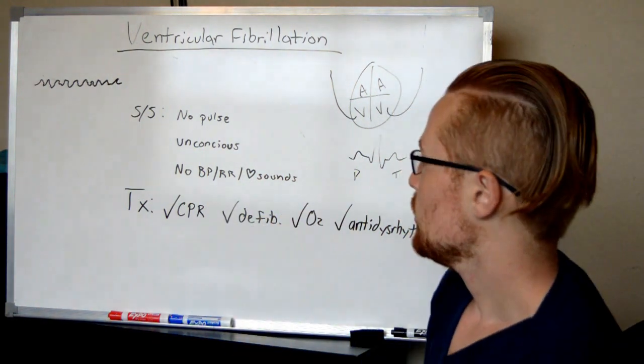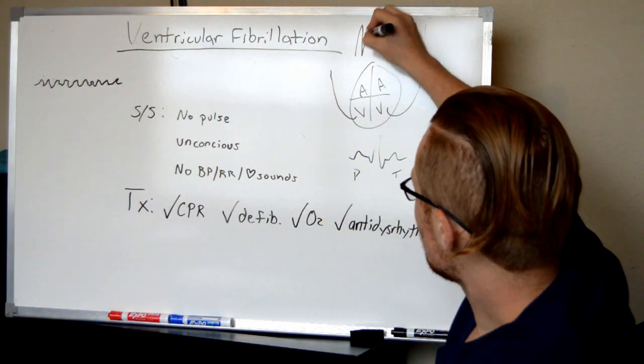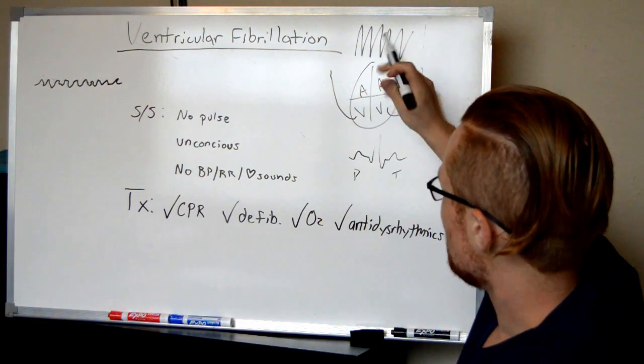So in V-tac, you may still have a pulse. V-tac looks different than V-fib in that you'll see the sawtooth pattern because you'll still see there's a good contraction with each beat.